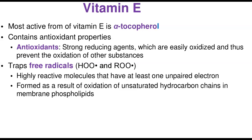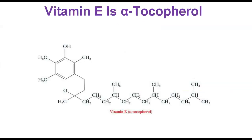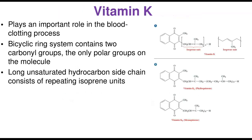The most active form of vitamin E is alpha-tocopherol. It contains antioxidant properties and is one of the strongest antioxidants known — a strong reducing agent that is easily oxidized and thus prevents the oxidation of other substances. It traps free radicals, which are highly reactive molecules with at least one unpaired electron formed as a result of the oxidation of unsaturated hydrocarbon chains in membrane phospholipids. This is the structure of alpha-tocopherol, the most active form of vitamin E.